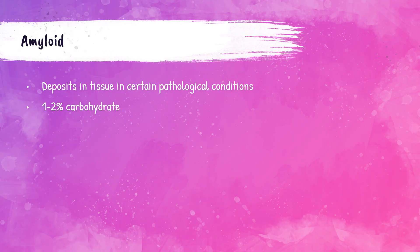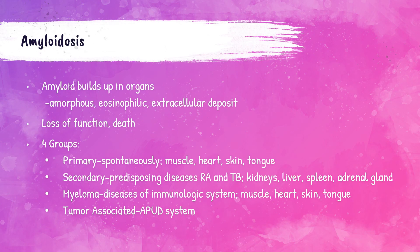Amyloid are abnormal fibrous protein deposits in both tissues and organs in certain pathological conditions. They also contain around 1 to 2% carbohydrates, mostly composed of acid mucopolysaccharides. Amyloidosis is a disease where amyloid builds up in the patient's organs and tissues. These deposits eventually replace the important cellular elements of those organs, causing a loss of function and eventual death of the patient.